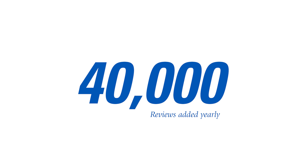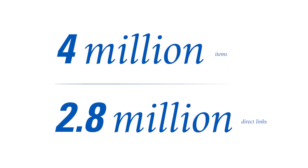Extending the MR tradition, MathSciNet contains more than 4 million items and more than 2.8 million direct links to the full-text original articles.